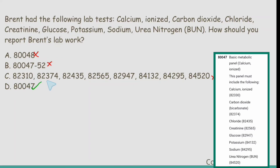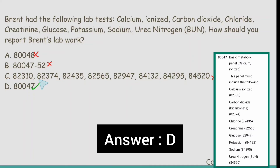Option C is wrong because it lists individual codes such as 82310 for calcium total and 82374 for carbon dioxide from the Basic Metabolic Panel Calcium Total. The question mentions calcium ionized, not calcium total, and we already have code 80047 which includes all these tests, so we should not report them separately. Also, 82310 for calcium total is incorrect here. So option D is the correct answer.